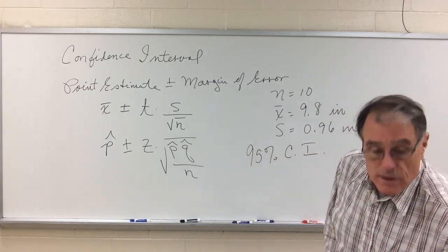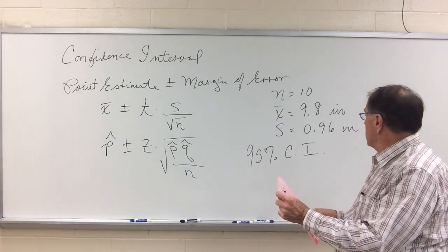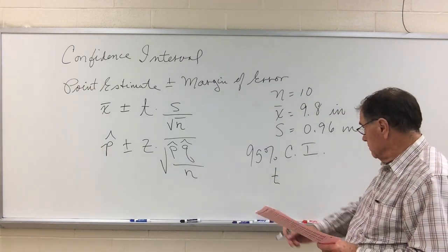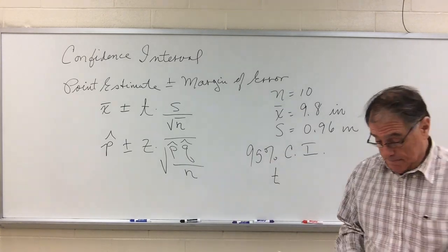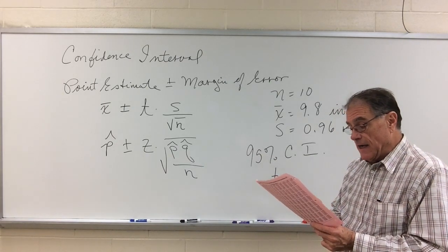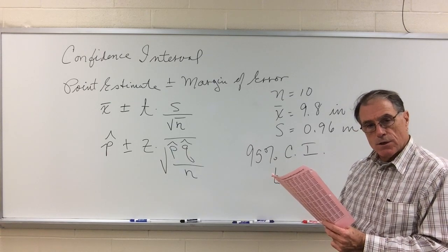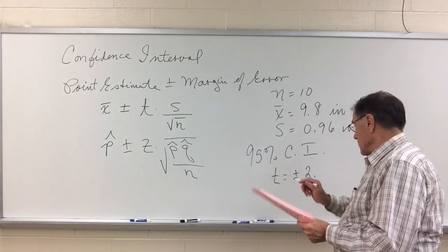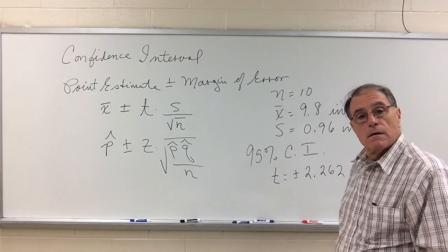I'd like to calculate the 95% confidence interval. So what I'm going to do is go to the t-table, and I want to find the t-score for a 95% confidence interval. Now my sample size is 10, so my degrees of freedom will be 9. So I'm going to look up the table, 95% confidence interval, I have 9 degrees of freedom, and my t-score is 2.262.